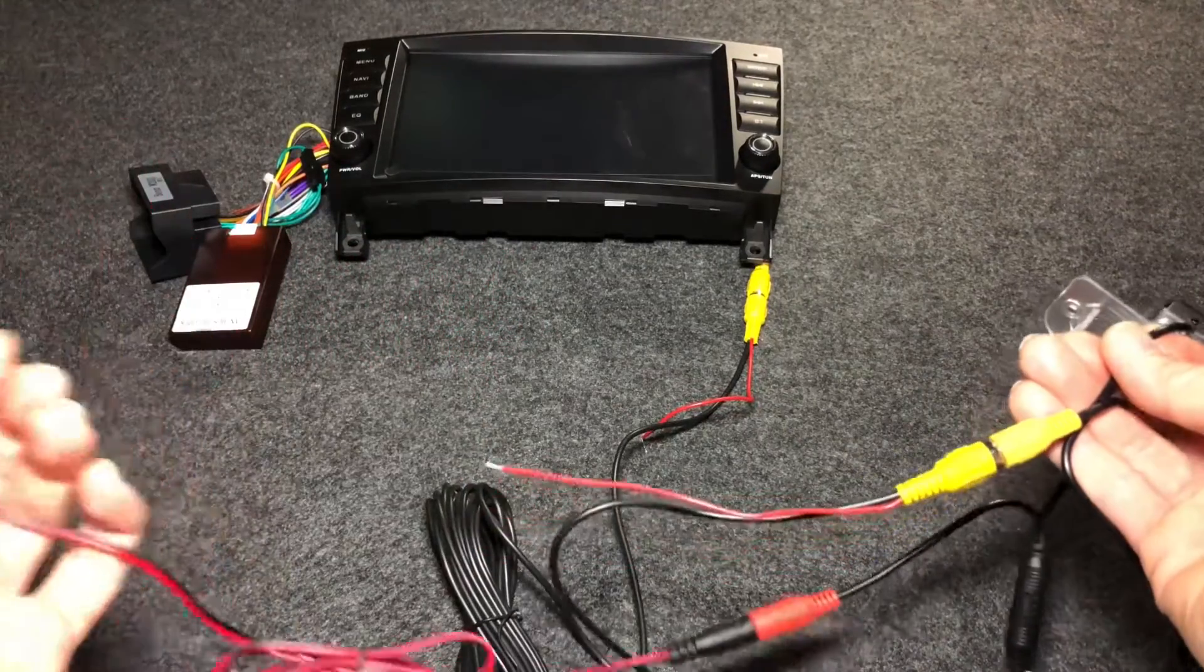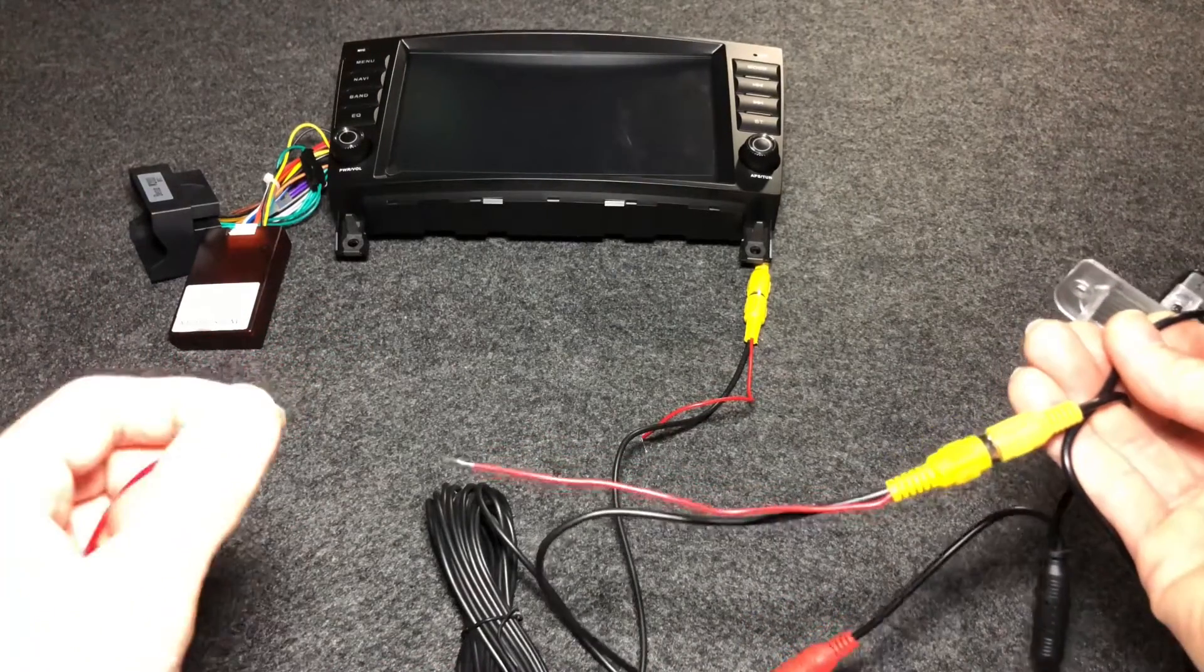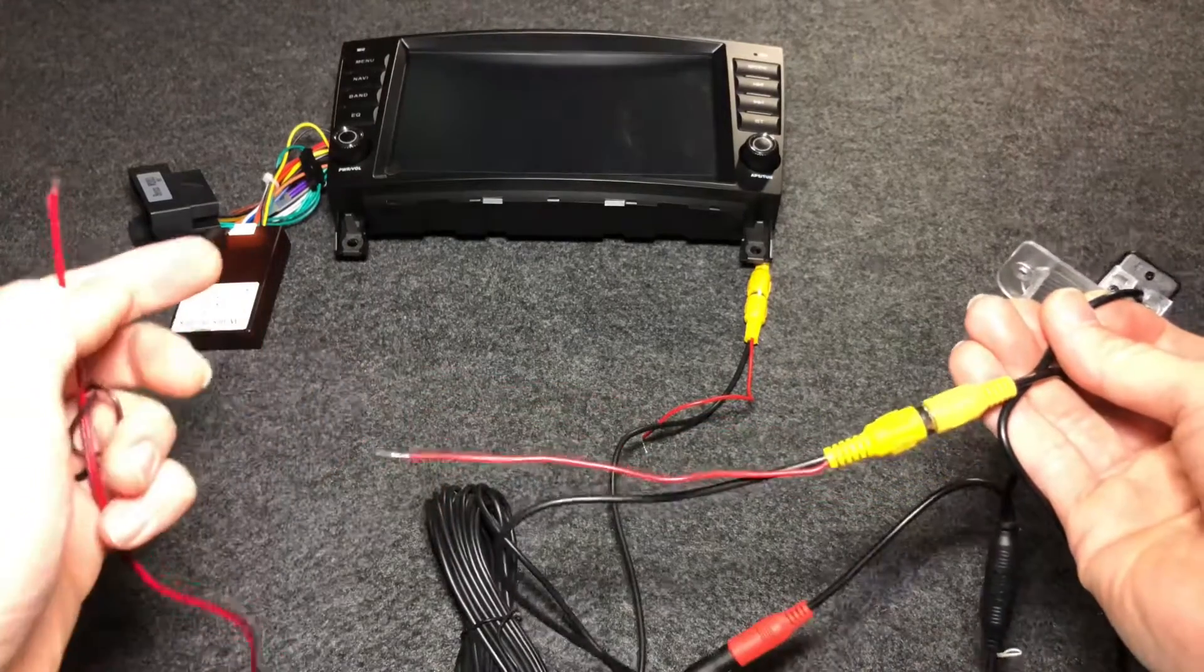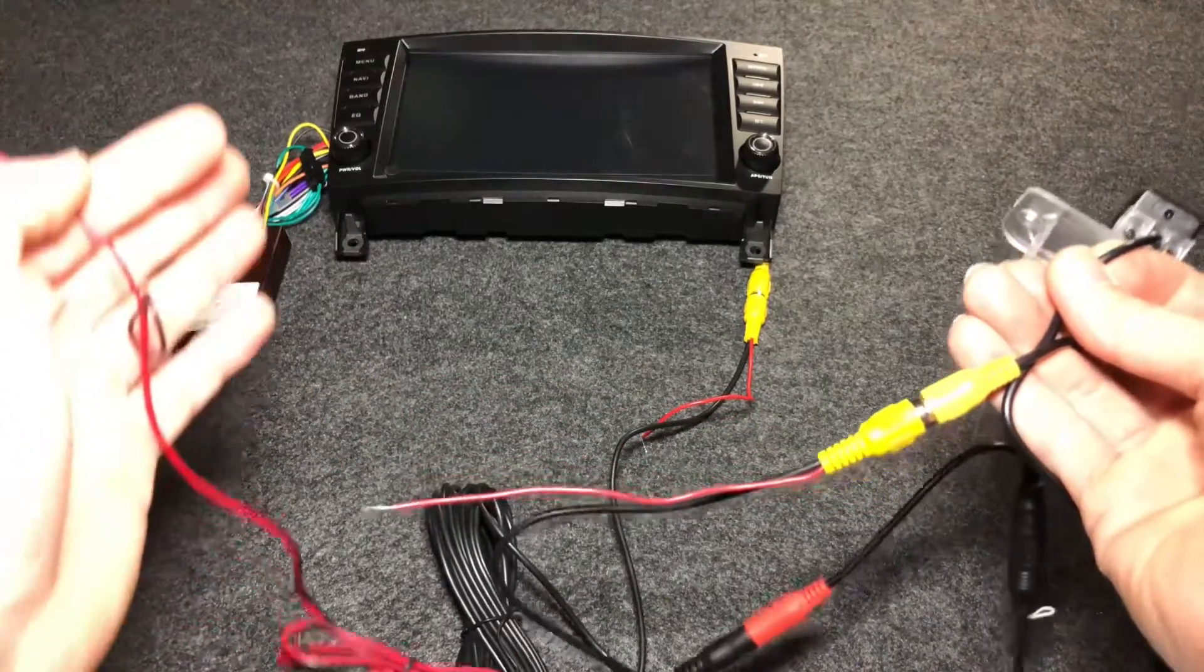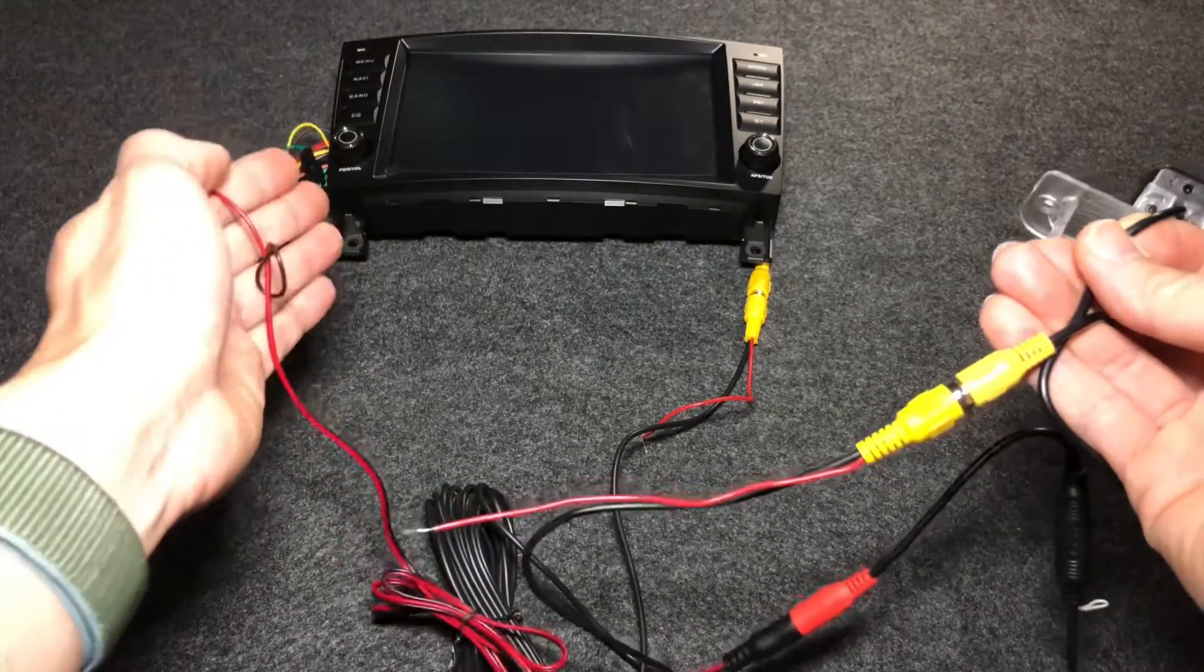But I don't want to tap onto the reverse light of the car. I want to keep it isolated. If it's for the reverse camera, then I want to be able to tap it on the head unit itself.